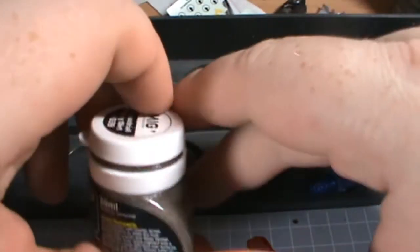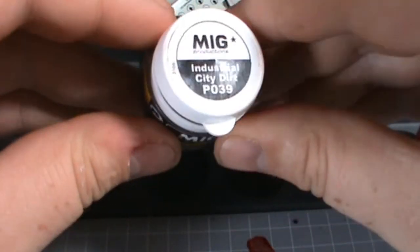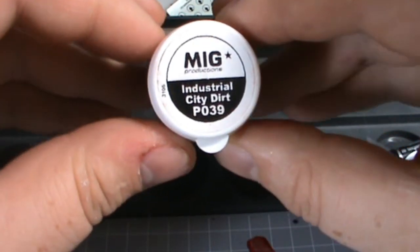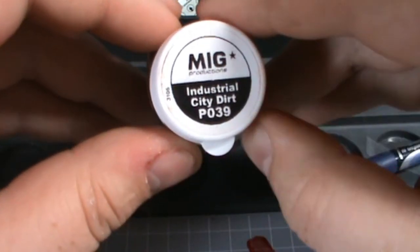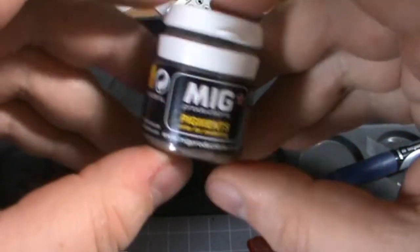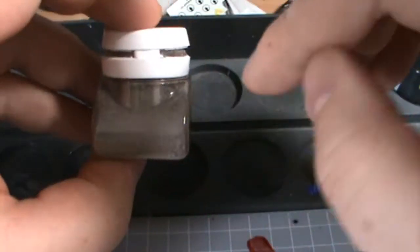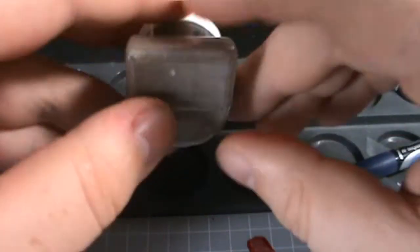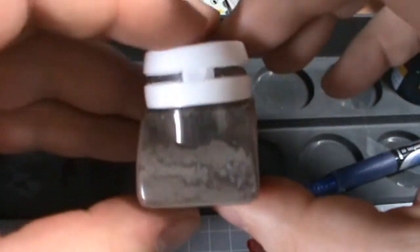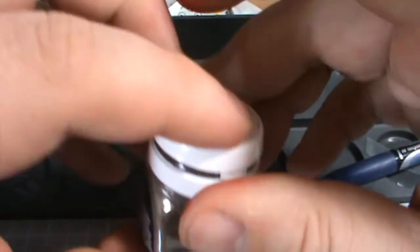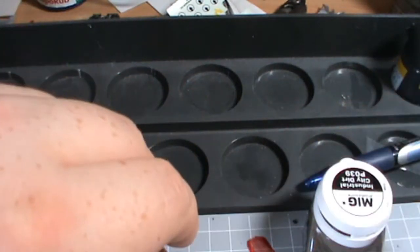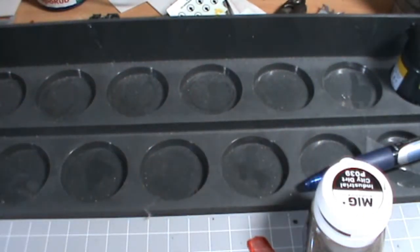So here we go. The dust, the pigment I'm going to be using is Industrial City Dust P039 from MIG. It's a very greyish pigment. So what I'm going to do is I'm going to load the gun up. I'm actually going to show you loading the gun up and let's get this done.